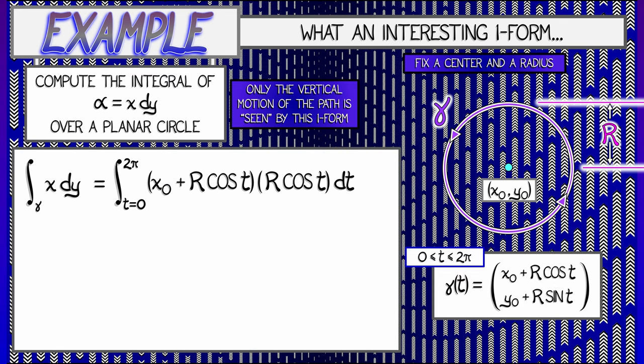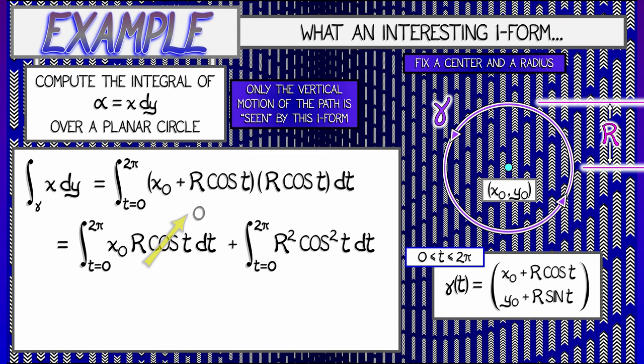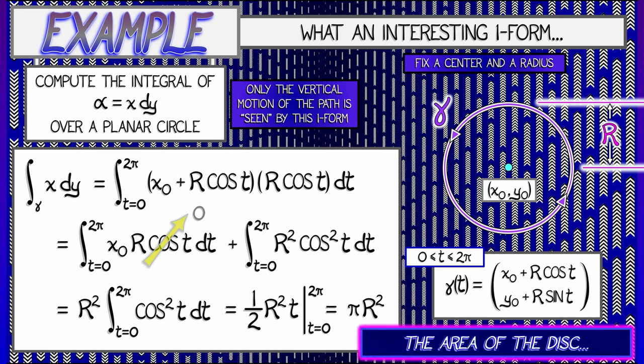Now, the integral of x dy along this curve is given by what? For x, we get quantity x naught plus r cosine t. For dy, we get r cosine t dt, and we integrate as t goes from 0 to 2 pi. This is going to split up into two terms. The integral of x naught r cosine t, and the integral of r squared cosine squared t. In both cases, as t goes from 0 to 2 pi. Now, that first integral, that goes away because you're integrating cosine over a full 0 to 2 pi period. So the only thing that we have to do is to remember how to integrate cosine squared of t. You might want to go back and review that from single variable calculus, that whole double angle formula thing. In the end, what we're going to get is 1 half t times r squared, as t goes from 0 to 2 pi. That's a final answer of pi r squared.